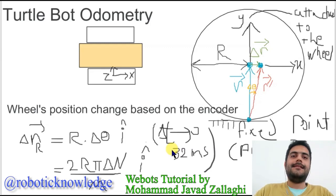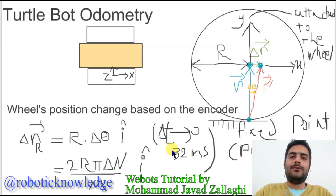In this lecture, I want to explain how to measure the change in position of a mobile robot — in our case a turtle bot — using its wheels and encoders.